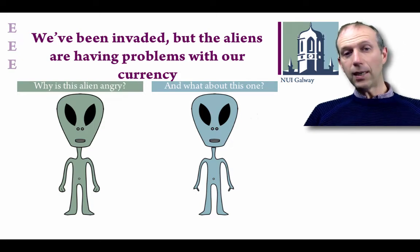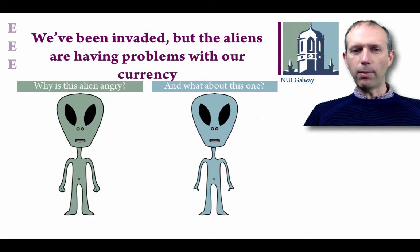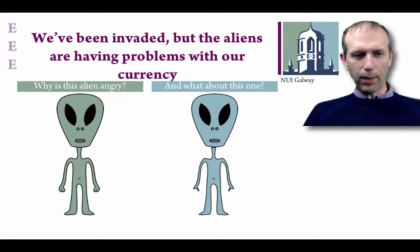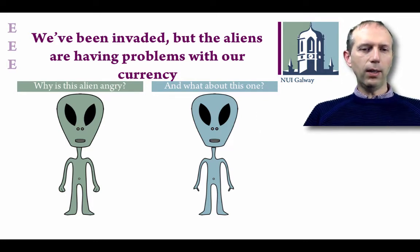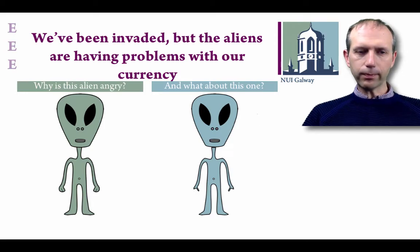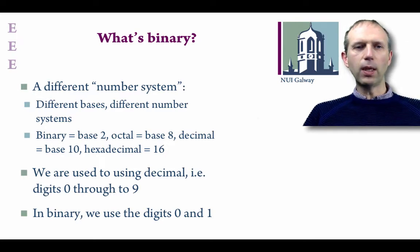We've got two friendly-looking aliens here who are having problems with our currency. The alien on the left-hand side has got four digits in total, whereas the person on the right has got two digits. They're both struggling with our currency because it's all in decimal, which involves the digits zero through to nine. These poor aliens only have four and two digits respectively — however, they would probably have a good time with our computing systems because they are all in binary, especially the person on the right with the two fingers.